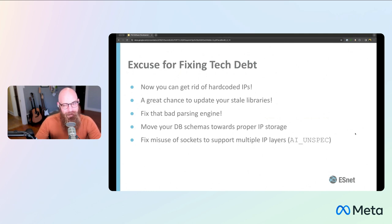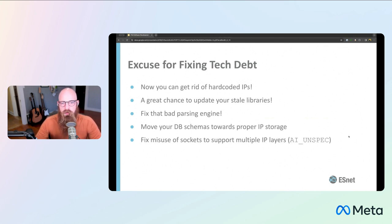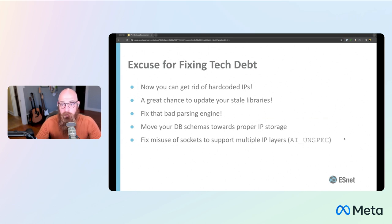Still storing your IP addresses as strings in your database? It's a great time to fix that — move to the proper IP types in your actual database storage. It'll be more efficient, it'll be faster — it'll just be the right thing to do when you're doing these transitions from V4 to V6. If you're misusing sockets in your application, it's a great time to move to supporting multiple IP layers, and it's typically pretty easy — it's abstracted for you in those socket APIs and system API calls.